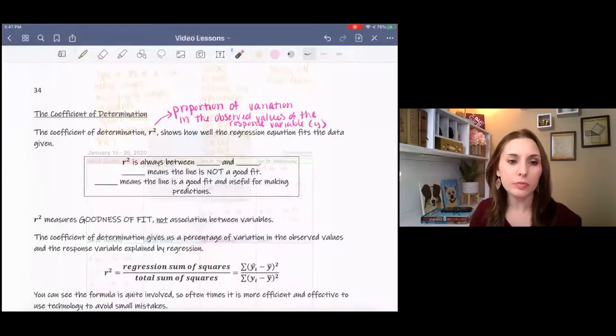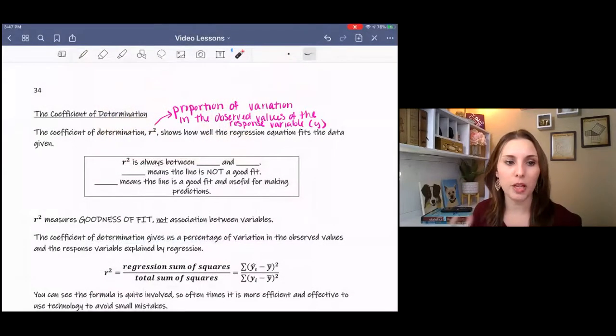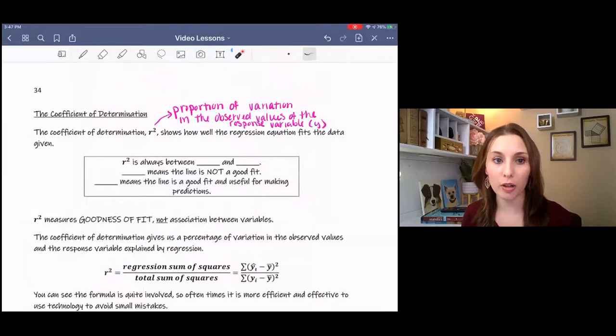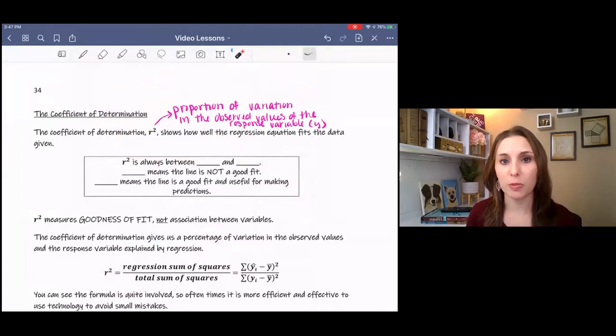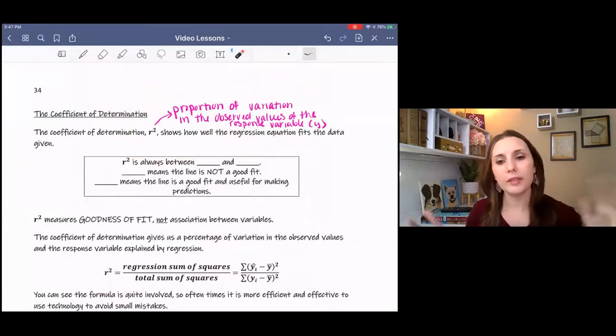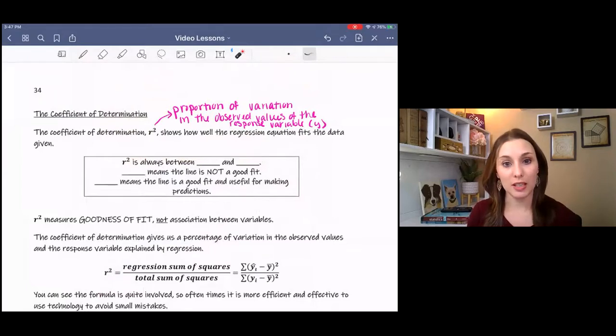So the coefficient of determination is r squared, and what it represents is a proportion of variation in the observed values of the response variables. So how far off, basically how good a fit the regression equation is.